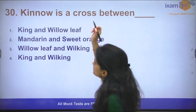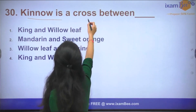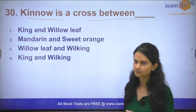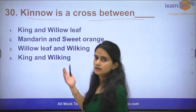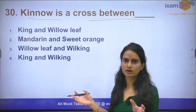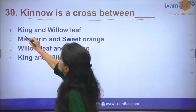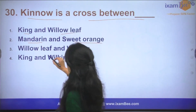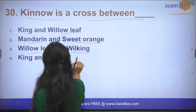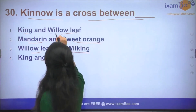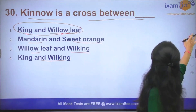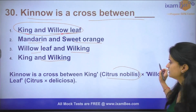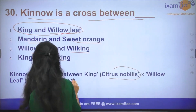Question number 30: Kinnu is a cross between which plants? Kinnu is one of the citrus fruits. The options are King and Willow leaf, Mandarin and Sweet orange, Willow leaf and Wilkin, or King and Wilkin. The answer is King and Willow leaf. Kinnu is made by a cross between King and Willow leaf — specifically a cross between Citrus nobilis and Citrus deliciosa.